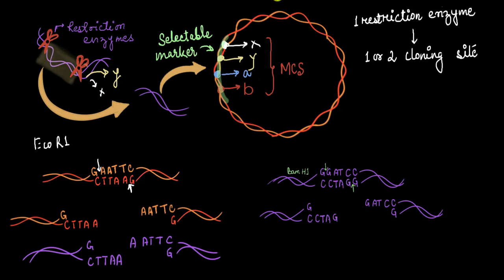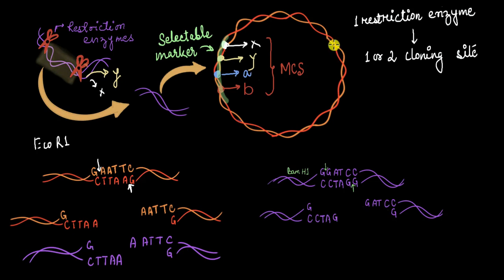Let's quickly summarize what we learned in this video. First, we use the same restriction enzyme to cut both the gene of interest and the vector, so that they have overhangs that perfectly fit each other. Second, one restriction enzyme should have one or a maximum of two cloning sites in the vector, because multiple sites would create multiple fragments and we don't want that. Third, and most importantly, a vector should have multiple cloning sites so that it can accommodate genes cut with different restriction enzymes.